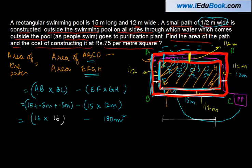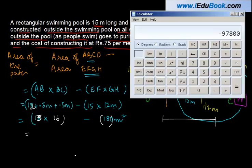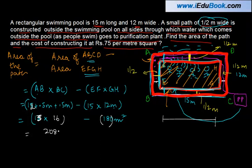So 13 into 16 minus 180 meter square. How much is 13 into 16? Let's see, 13 into 16 is equal to 208 meter square minus 180 meter square equals 28 meter square.